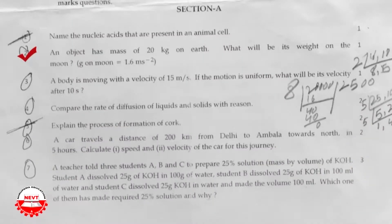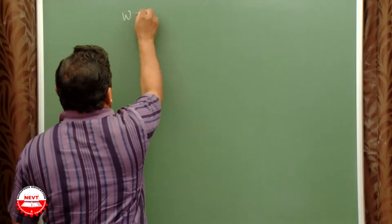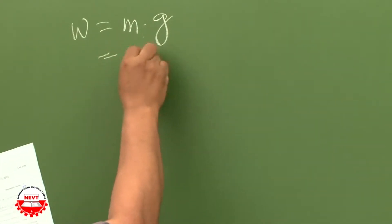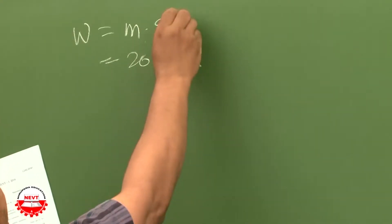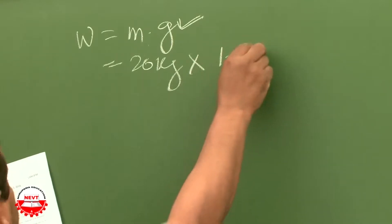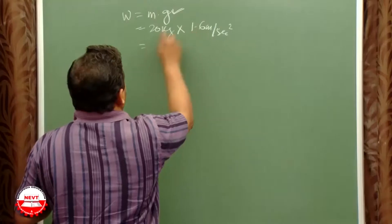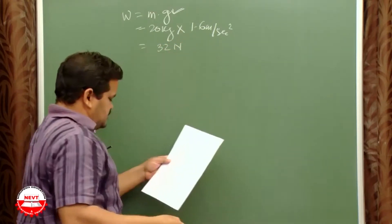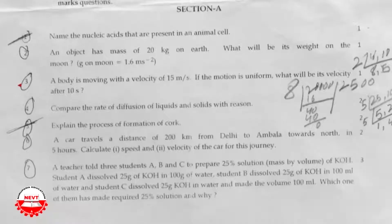Question number two: An object has a mass of 20 kg on Earth. What will be its weight on the moon? The acceleration due to gravity on the moon's surface is 1.6 m/s². Weight W = m × g. Here m = 20 kg and g (moon) = 1.6 m/s². So W = 1.6 × 20 = 32 Newtons.